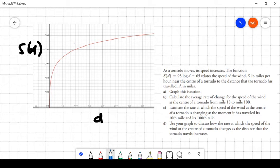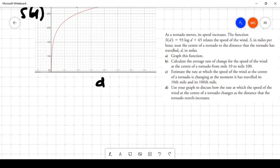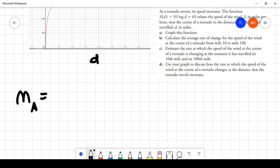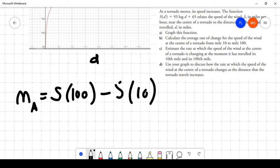So if we're going to do that, what we need to do is figure out the following. We need to figure out M sub A for average equals S(100) minus S(10) divided by 100 minus 10. Right, that's the average slope calculation.